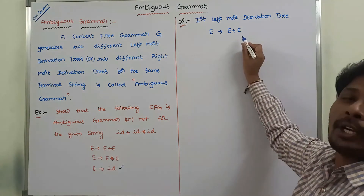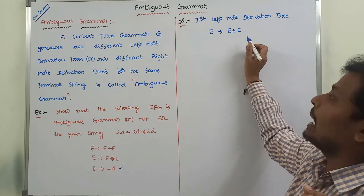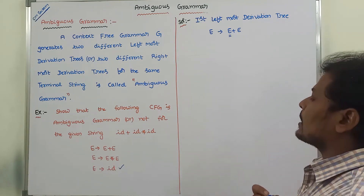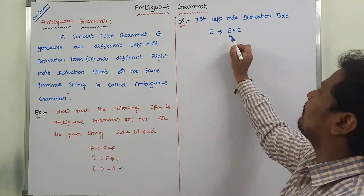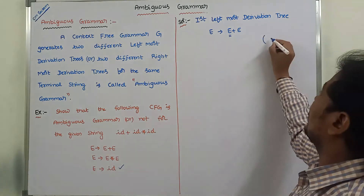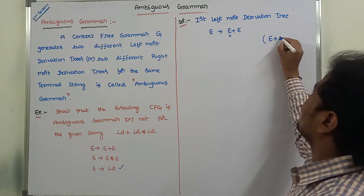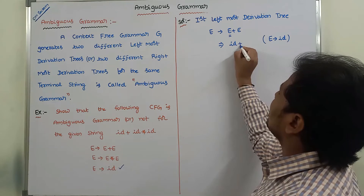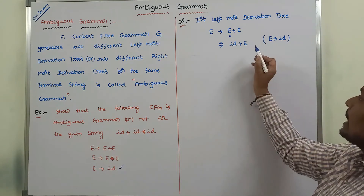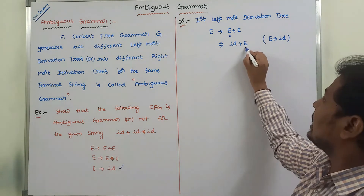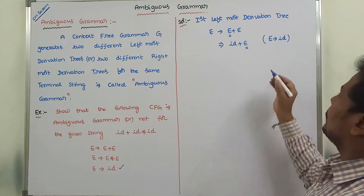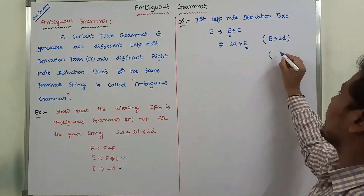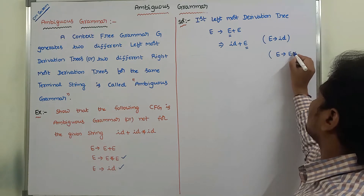In this production, what is the leftmost non-terminal? Here, this is the leftmost non-terminal on the right-hand side. We are substituting this production in the place of the leftmost non-terminal. So, the production E derives to id gives us id plus E. Now, what is the leftmost non-terminal here? E is the leftmost non-terminal. So, now we are substituting the production E derives to E star E in the place of leftmost non-terminal E.